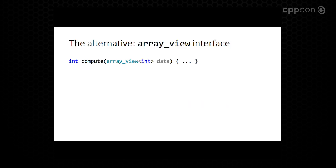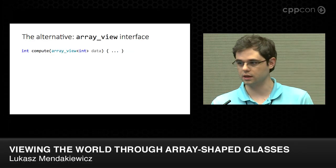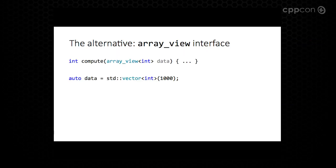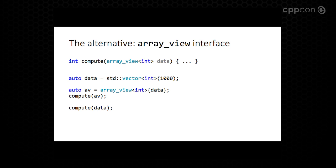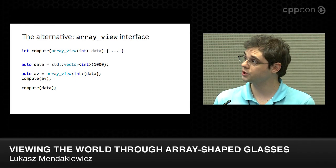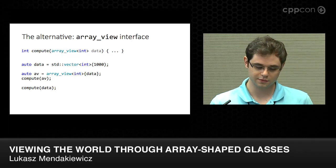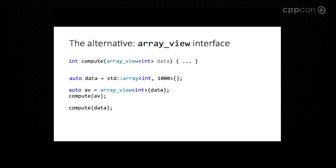The alternative in C++ that we are proposing is an interface based on array_view, where you specify the interface as shown. This would be a compute function taking an array_view of a given type. Given that you have data in a std::vector, you can create an array_view over it — a view which refers to the data in the vector — and call the function on it. If the extra line is too much, the constructor is implicit, so you can just call the compute function passing the vector as a parameter, which will create the array_view behind the covers. This works equally well for C arrays, std::array, or any of the types described earlier, so it really generalizes the way you accept contiguous data in an algorithm.